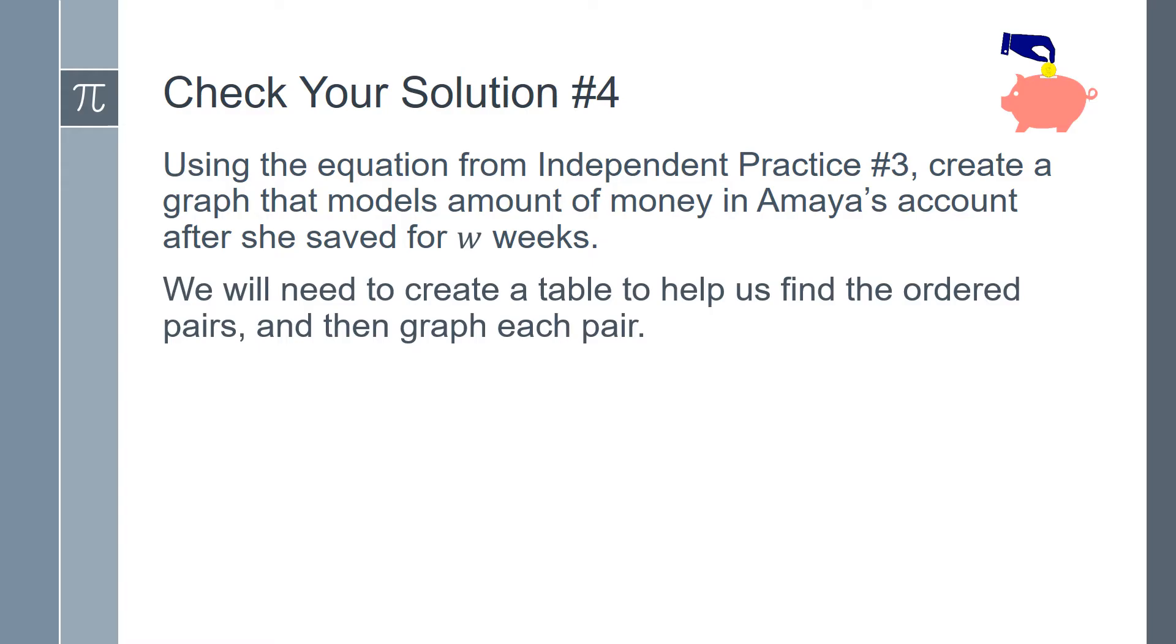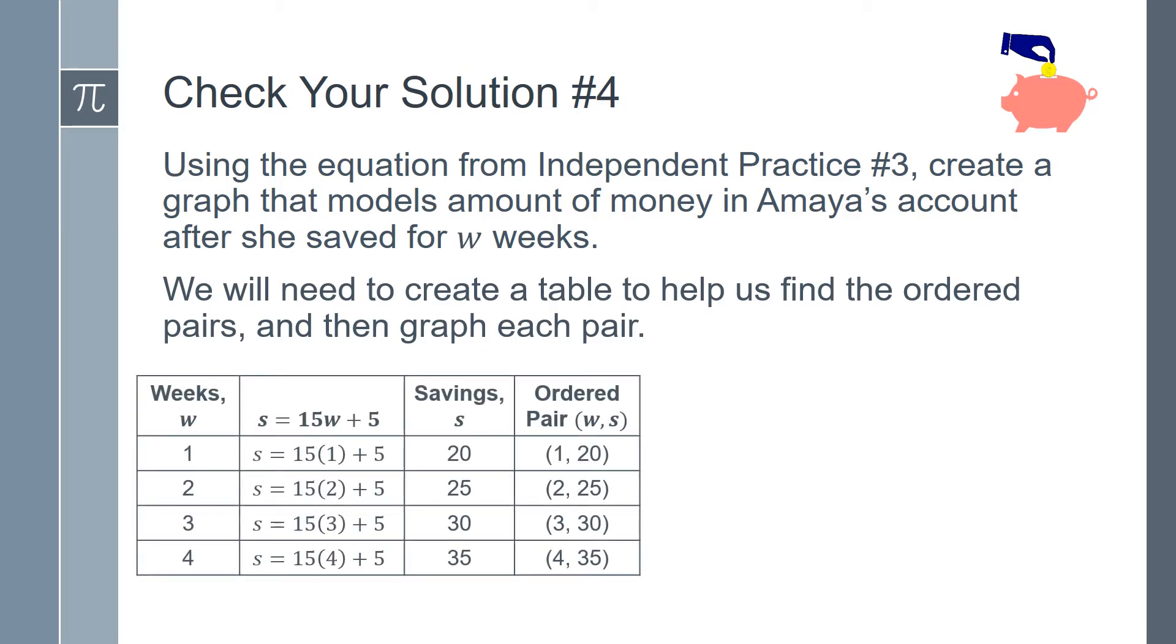In order to help us solve this problem, we can create a table to find the ordered pairs and then graph each pair. Your table should look like this. On the left hand side you have the number of weeks. And then in the next column you have the equation with weeks substituted in. And these equations help you find the savings, which go in the third column. And then the ordered pair, which is W, S, in the fourth column.